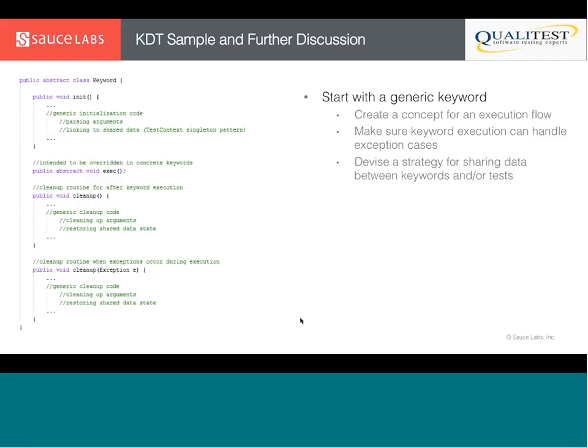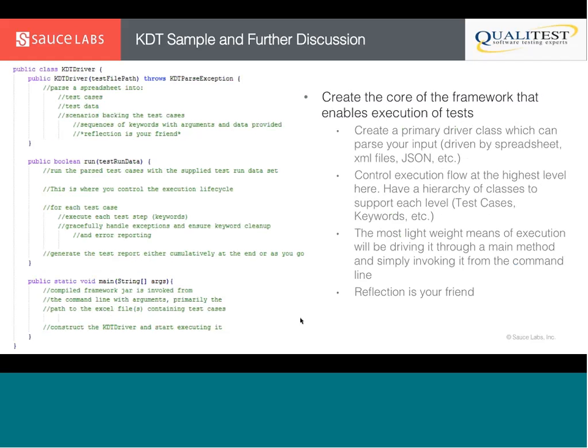After you've got the keyword in place, set up the framework for how you execute things. You'll have some core driver of the framework — the interface through which everything is executed. When building a KDT framework, you have some sort of front end: a spreadsheet, XML files, JSON, or something text-based that defines what tests to run and what keywords compose those tests. The core driver needs to parse that input, use reflection to find and instantiate keyword classes, run everything while gracefully handling errors, and generate a test report.